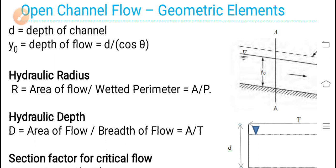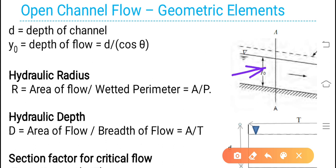This is the direction of flow, as shown here. You can define different geometric elements. Hydraulic radius, denoted by R, is equal to the ratio of area of flow divided by wetted perimeter.